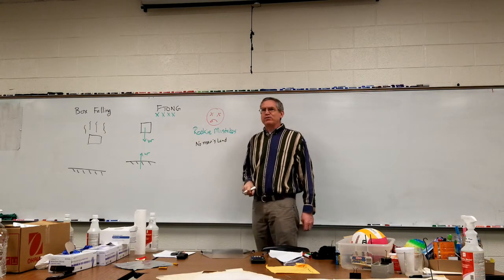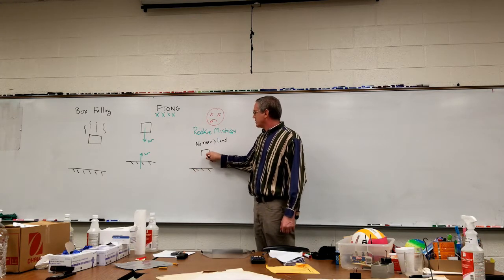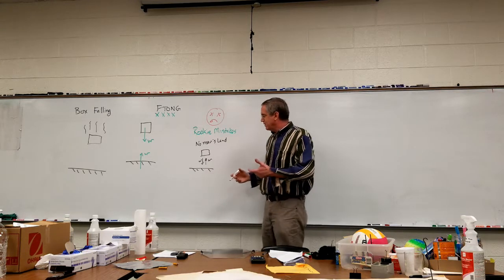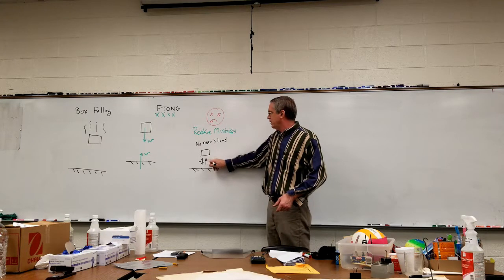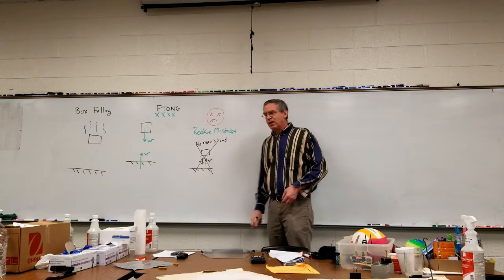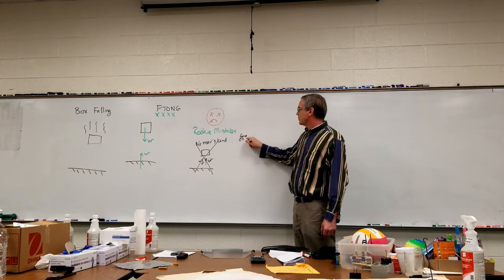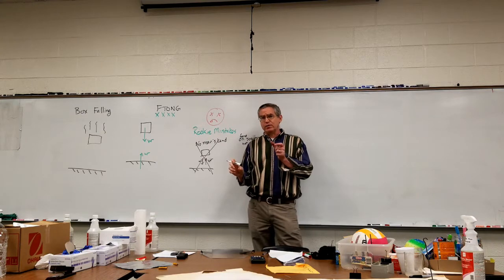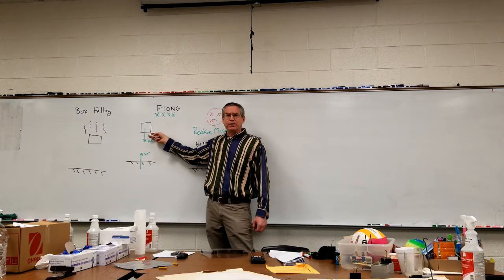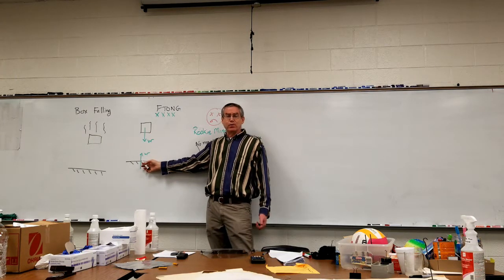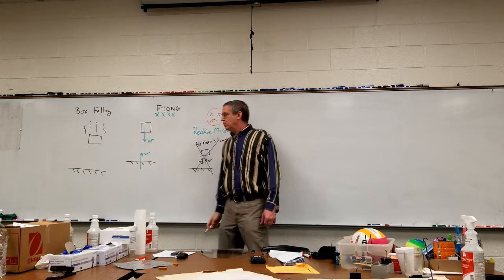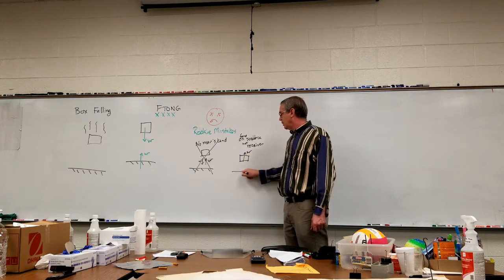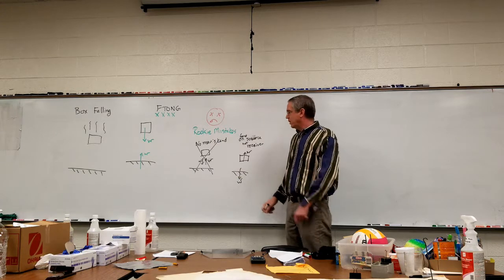Rookie mistakes: no man's land. I have seen this way too many times — you've got ground, you've got box, and then people draw the arrows in the middle. I have no idea what the person intends. Sometimes there's a hint and I can sort of guess which object they intend, but don't do that. Another one is drawing the force on the source, not the recipient. Since forces require two objects, one is the source and one is the receiver. For this force, the box is the receiver and the ground is the source. Down here, the ground is the receiver and the box is the source. Sometimes people get it backwards — they say the box is pulling up on the earth, and so they draw the arrow in the wrong place. That's another rookie mistake — don't do that.